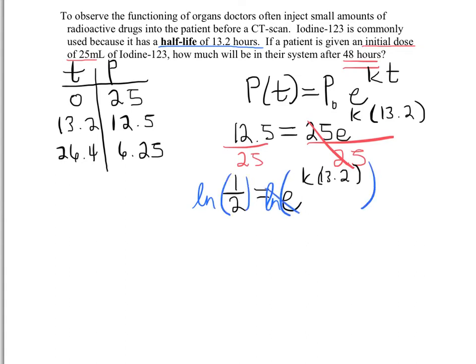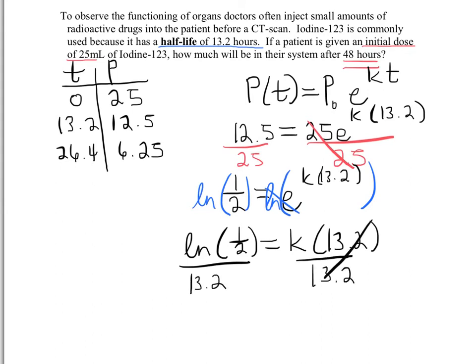Those will wipe out, so we'll end up with the natural log of one half, which is just some crazy decimal, equals K times 13.2. Divide both sides by 13.2. When I punch this in my calculator I get a value of about negative 0.0525. You might want to make sure when you punch that in you get the same thing that I do.